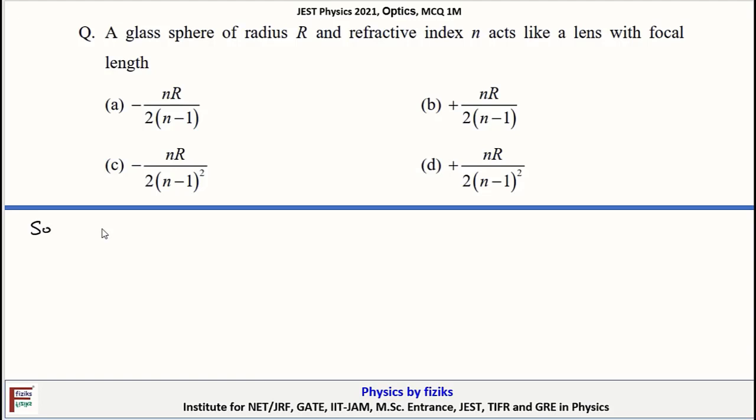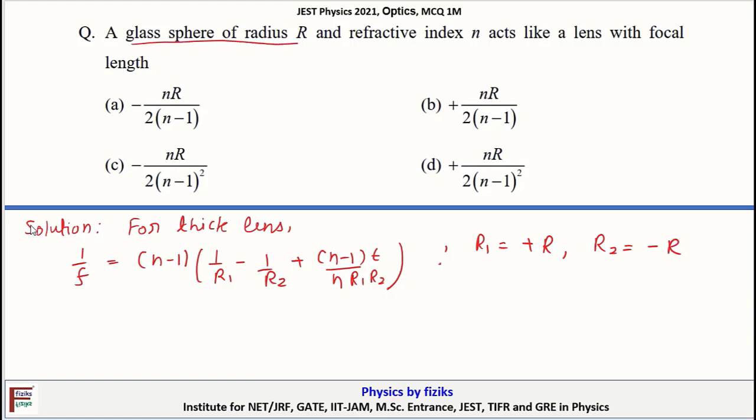Solution for this problem would be, for thick lens, focal length is given by 1/f = (n-1)(1/r1 - 1/r2) + (n-1)/(n*r1*r2)*t. Further, r1 would be positive r, r2 would be negative r. This is for sphere of radius r. Thickness would be 2r and refractive index would be n.